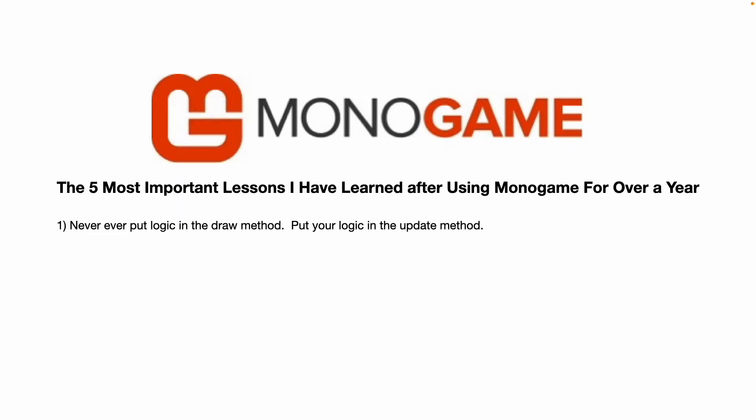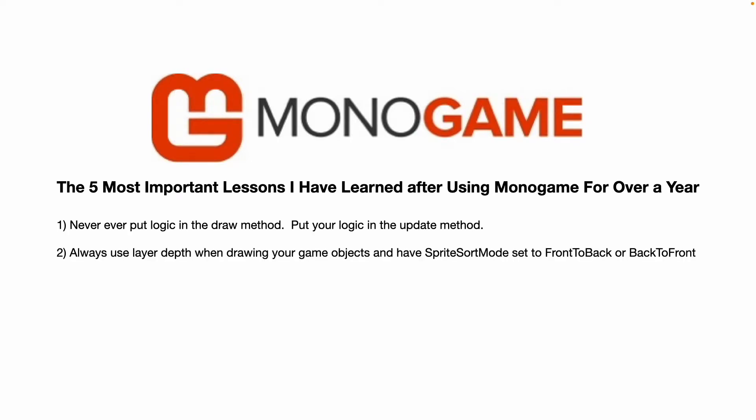That's much better than having sprites fail to draw on the screen. Ideally your draw method will just loop through your game objects and draw the ones that have visible set to true. Number two: always use layer depth when drawing your game objects and have sprite sort mode set to front to back or back to front. Without layer depth and sprite sort mode, you'll have to call the end of your sprite batch and begin a new one in order to draw a sprite on top of another, or even worse, draw the sprites in a specific order so the last sprites draw on top of the others.